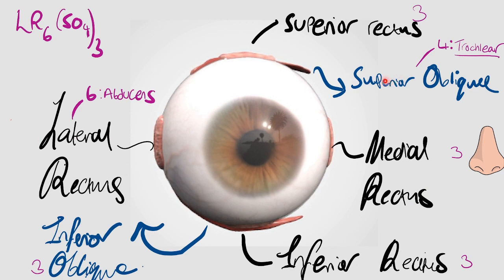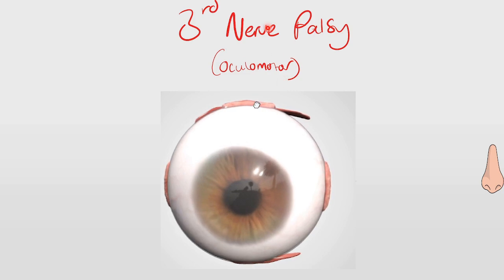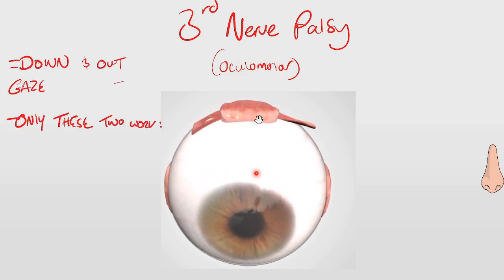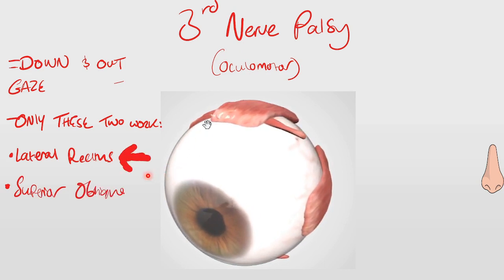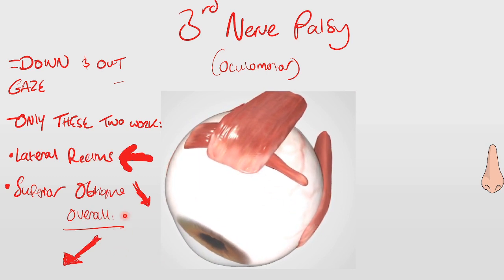The superior oblique will be working because it's innervated by the trochlear nerve, which is different from nerve 3. The overall movement is downwards. You might be confused - the superior oblique normally moves stuff inwards, but the abducens has a greater effect of pulling it outwards. So your overall effect is going to be downwards and outwards. In third nerve palsy, your eyeball goes downwards because the superior rectus isn't working, the lateral rectus pulls it outwards, and while the superior oblique pulls it inwards a little, it mainly pulls it downwards. Your overall vector is therefore down and out - that's your classical sign of a third nerve palsy.